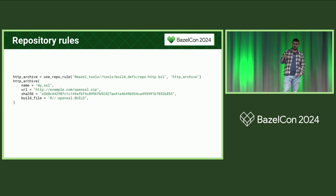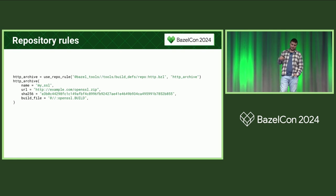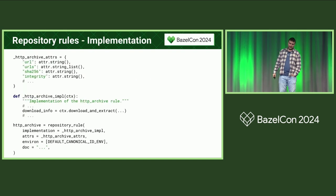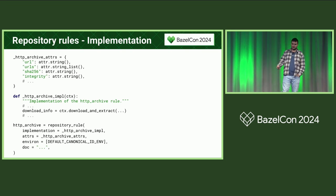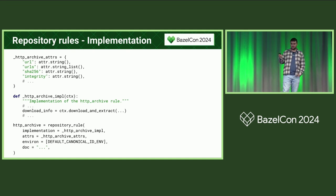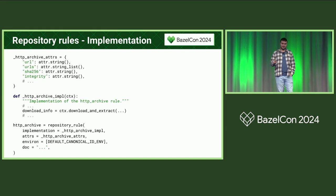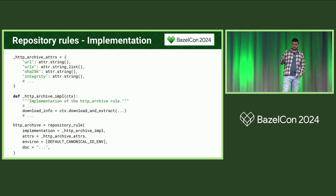This is how you would use a repository rule. You probably all know this one — it's the HTTP archive rule. You just give it some attributes and parameters to download an archive from the internet, extract it, and make it available to Bazel. Looking at how HTTP archive is implemented, you can see it has attributes just like a normal rule would — in this case, a URL, an expected hash, and some other attributes. It also has a rule implementation which calls the 'download_and_extract' method, and this is how it gets access to the internet. At the bottom, you can see that you make this available by calling 'repository_rule' and not 'rule' — this is how they are differentiated in Bazel.